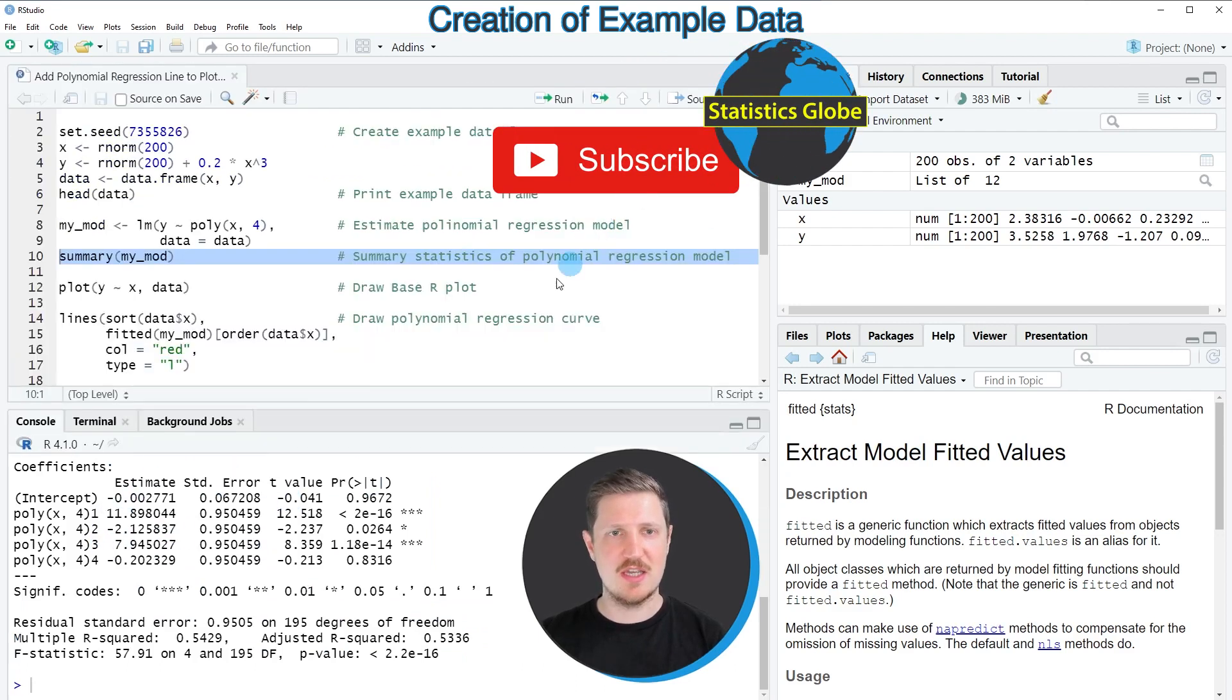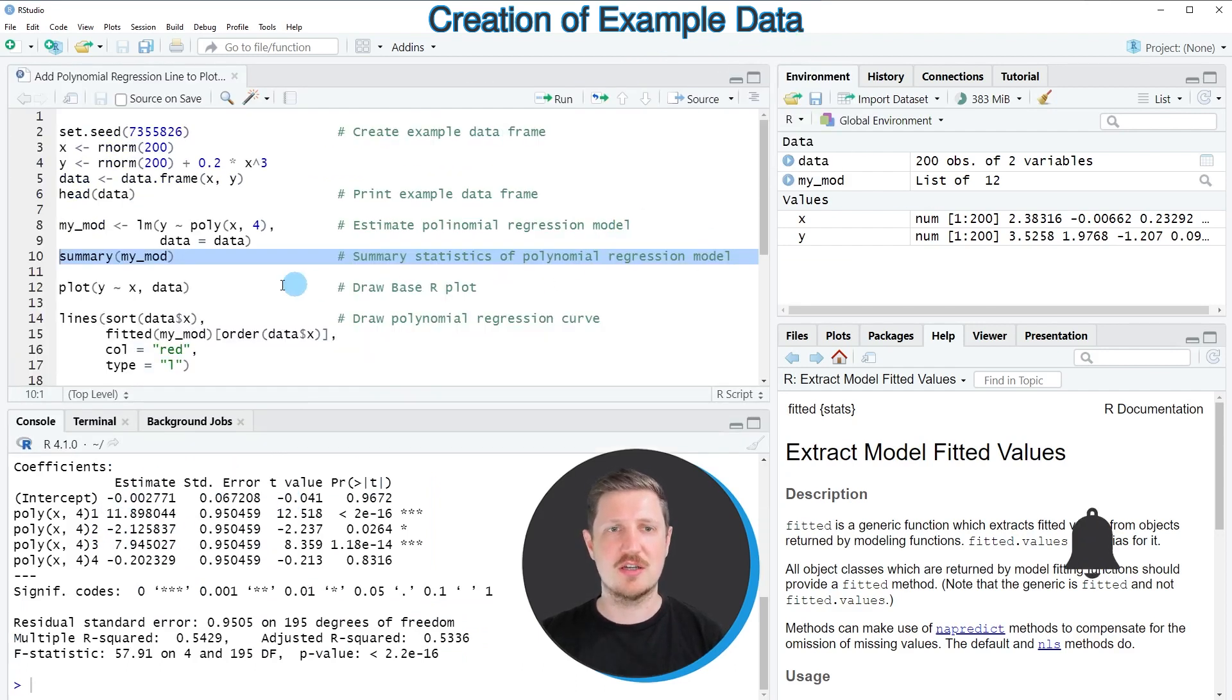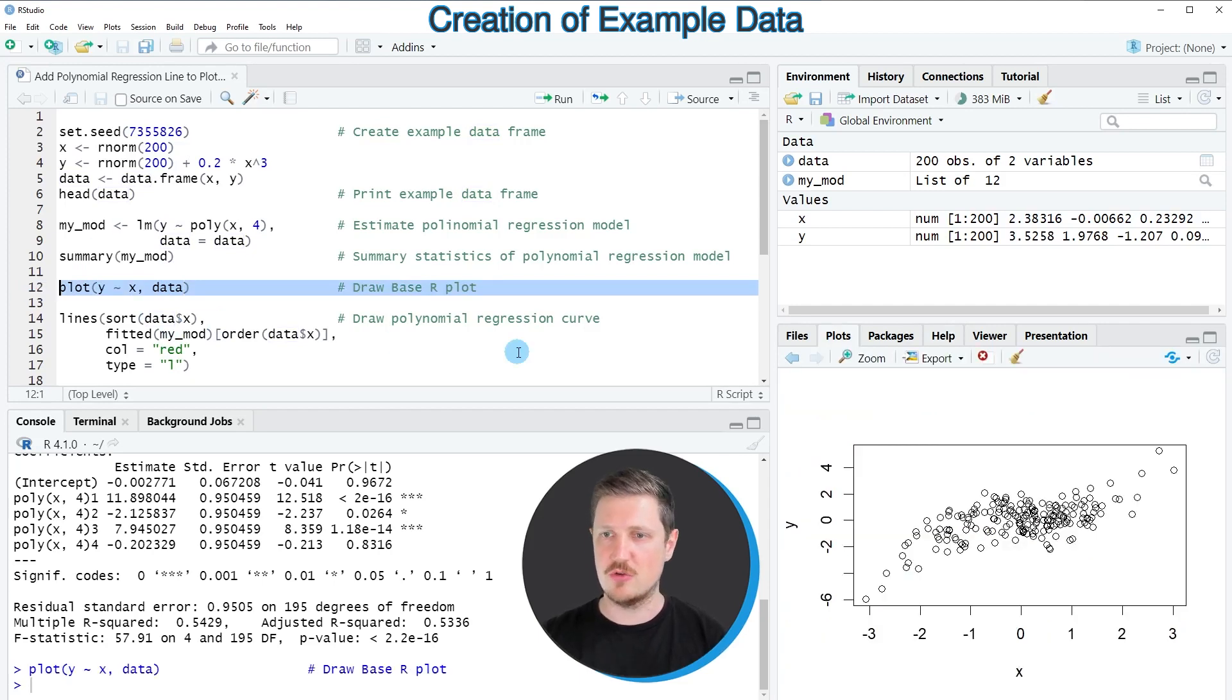However, in this case we want to draw our data and we can do that using the plot function as you can see in line 12 of the code. So in this line of code I'm specifying a model within the plot function and the data set in which our data is stored. So after running line 12 of the code, a new graphic is appearing at the bottom right which is showing our data points in a scatter plot.